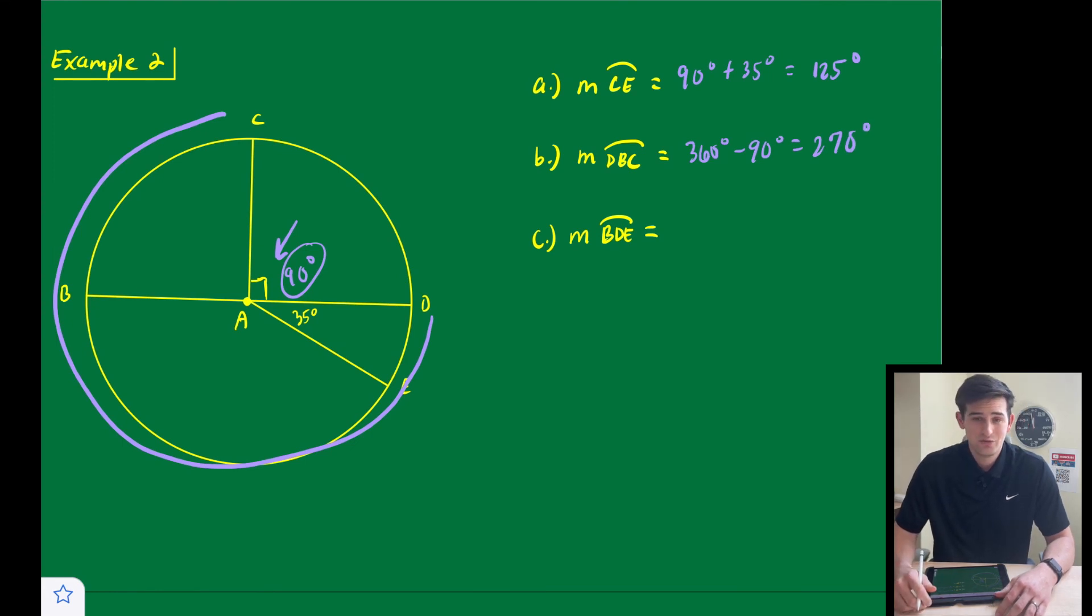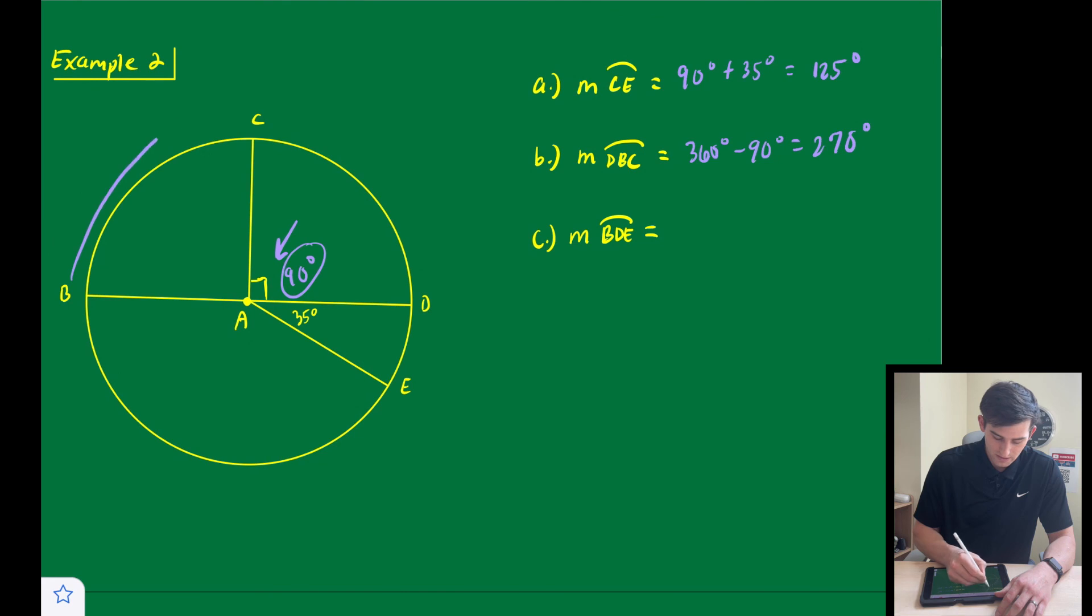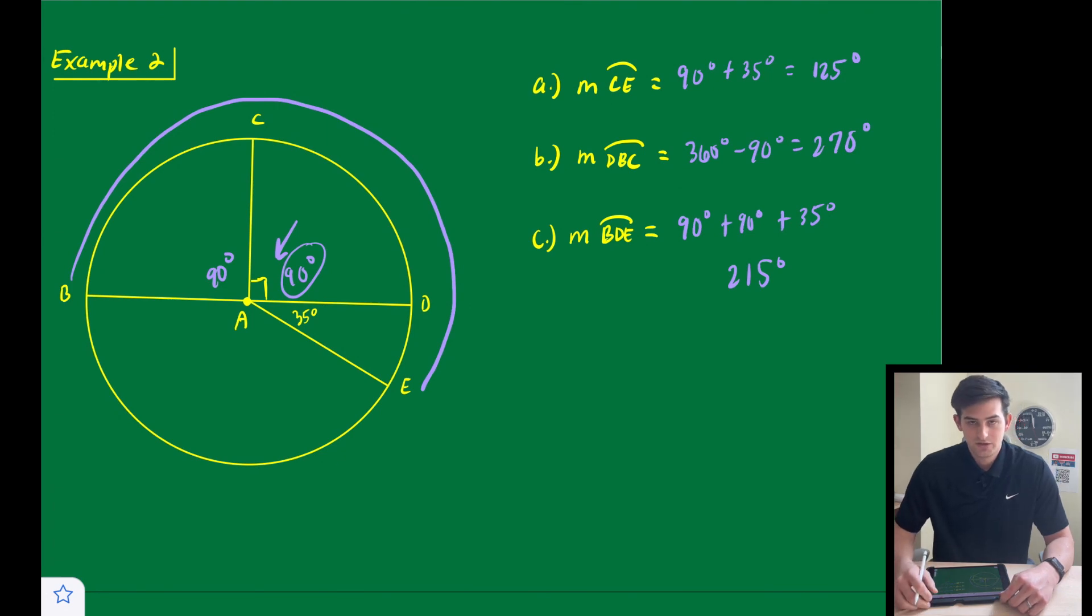And lastly, we're going to find the measure of major arc BDE. And so for this one, we had 90 degrees here, that means this one's also 90 degrees, and so now we can add 90 plus 90 plus our 35 degrees, and that's going to give us 215 degrees. And that is how you find arc measures of circles.